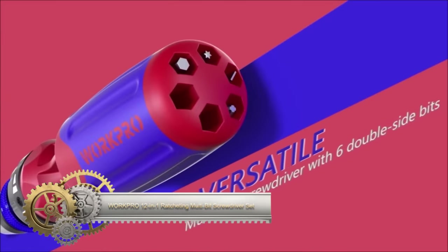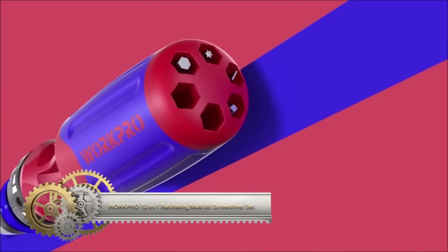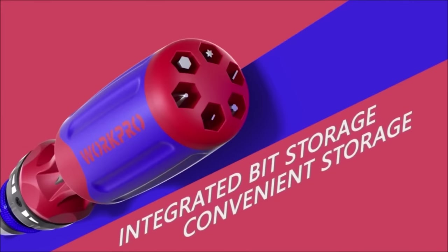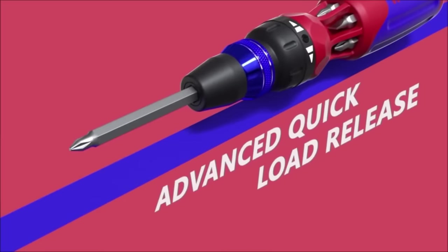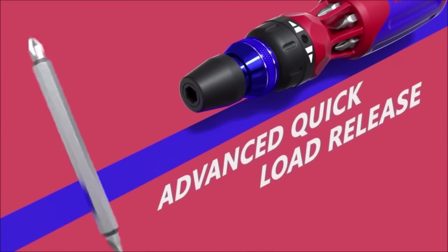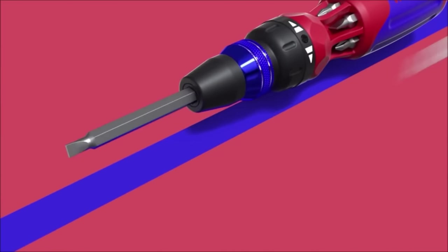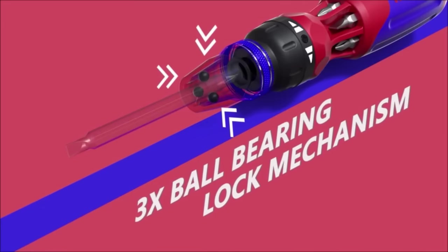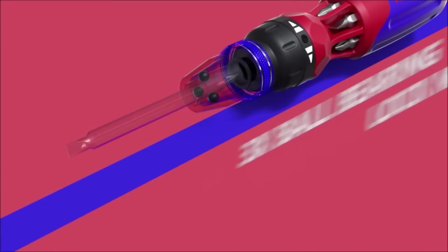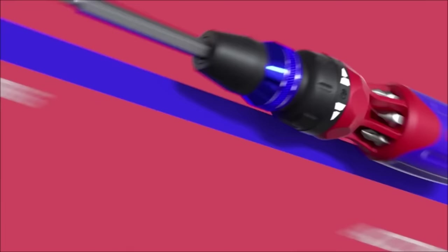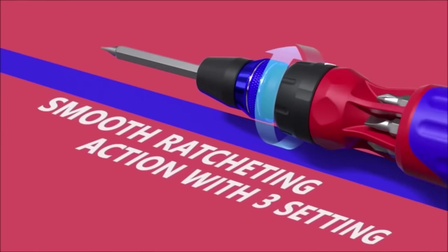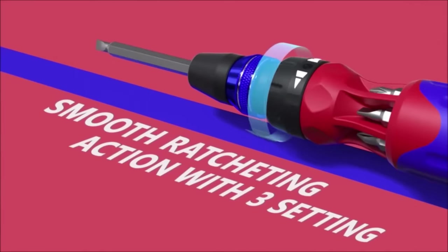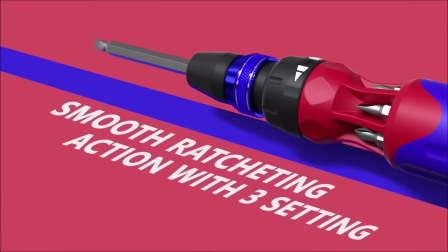The WorkPro 12-in-1 Ratcheting Multi-Bit Screwdriver Set is a versatile and durable tool designed for various tasks. With a comfortable ratcheting handle and 12 double-ended bits, offering 24 different tips in total, it's a handy companion for any job. These bits are constructed from high-quality steel and heat treated to resist wear and tear. The screwdriver features a quick-load mechanism for easy one-handed bit changes and provides a comfortable grip to reduce fatigue. This set includes a robust carrying case that keeps the screwdriver and bits organized and protected.